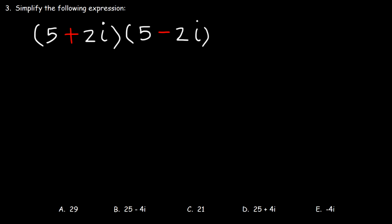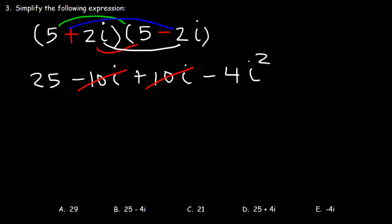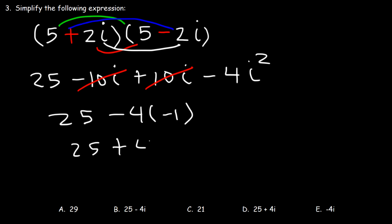Number three: simplify the following expression. We need to FOIL. So 5 times 5 is 25. 5 times negative 2i, that's negative 10i. And then 2i times 5, that's positive 10i. And lastly, 2i times negative 2i, that's negative 4i squared. Negative 10i plus 10i, these two will cancel. We know that i squared is equal to negative 1. Negative 4 times negative 1 is plus 4, and 25 plus 4 is 29, which is the answer. So A is the answer.